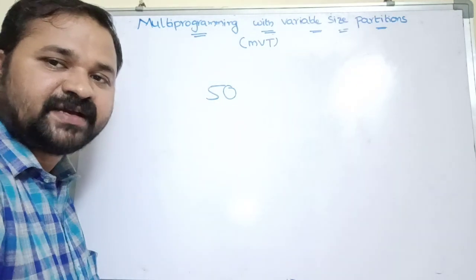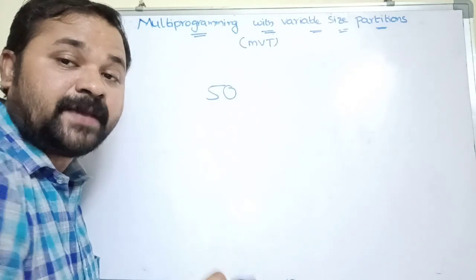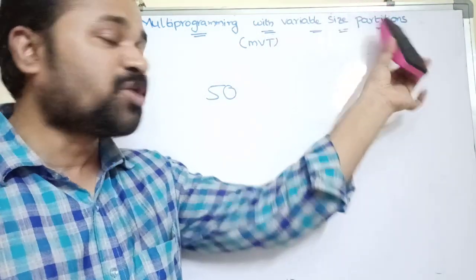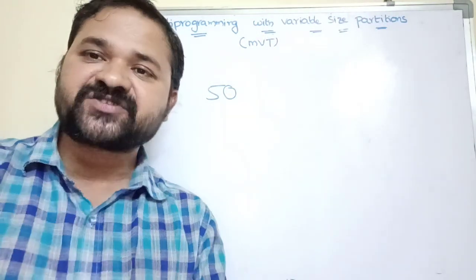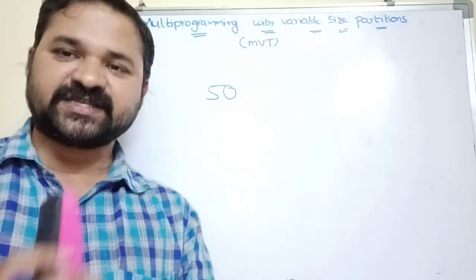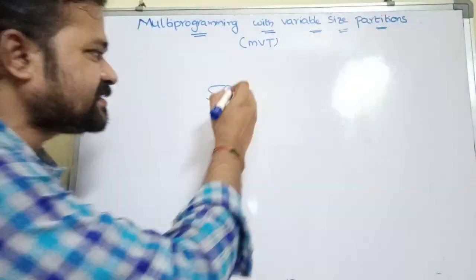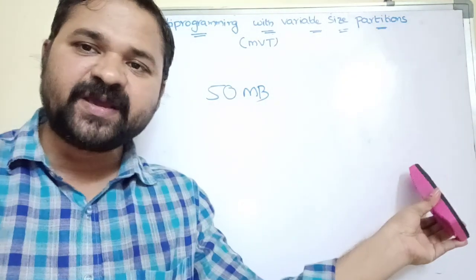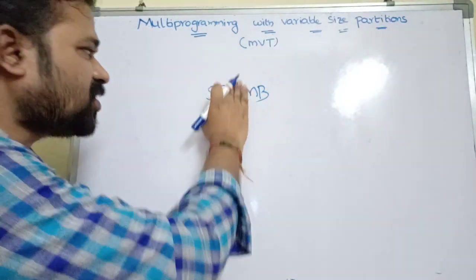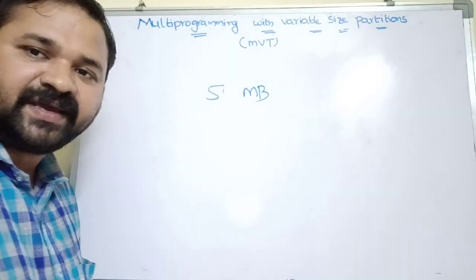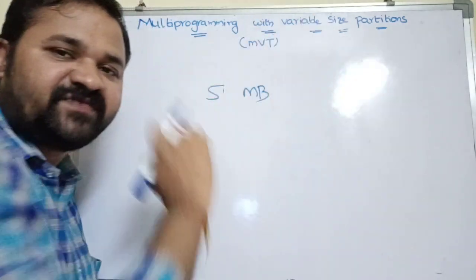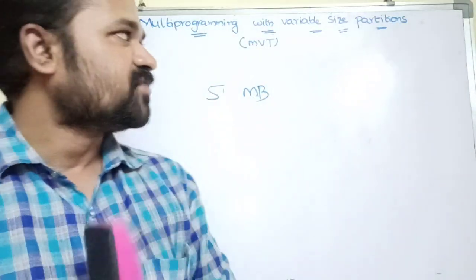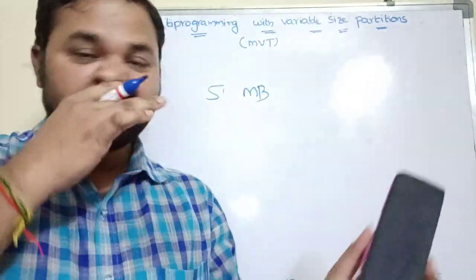If we have five processes, we should have five partitions in main memory. If we have 50 processes, we should have 50 partitions. The size of a partition depends upon the size of a process — if the size of a process is 50 MB, then the size of the partition will also become 50 MB.